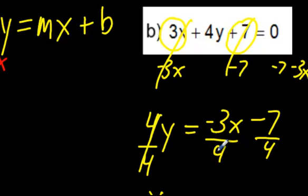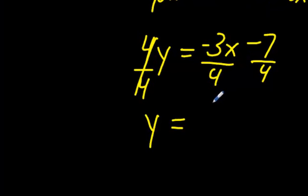Well, negative 3 divided by 4, really, it's just a decimal. It's 0.75. So I'm just going to leave it as a fraction. I'm just going to say it's negative 3 over 4x.